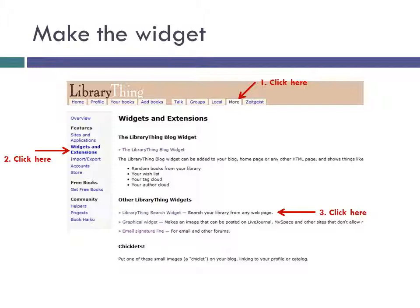First, we're going to make the widget itself. Go to LibraryThing and click the More tab at the top of the page, and then the Widgets and Extensions link on the left. Once you're on the page, click the LibraryThing Search Widget link.